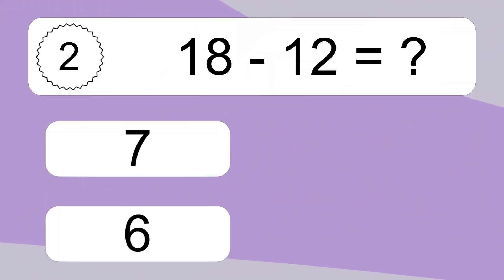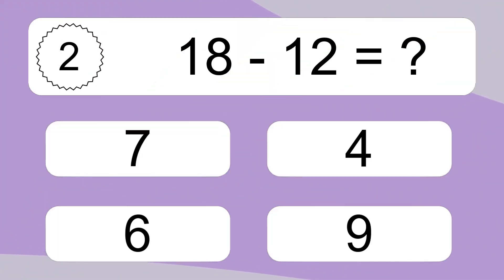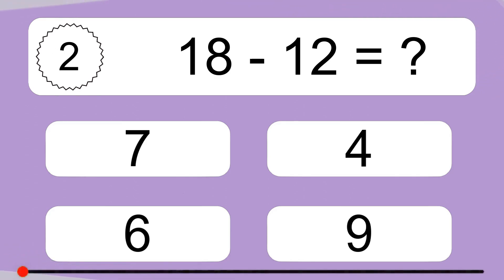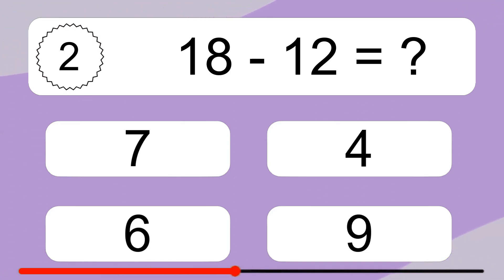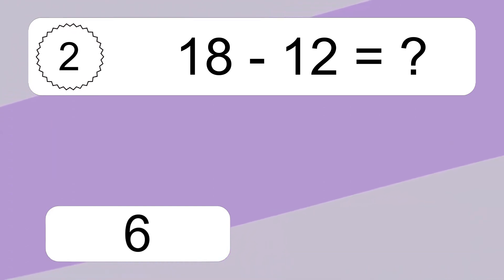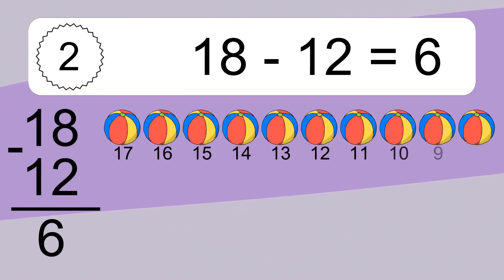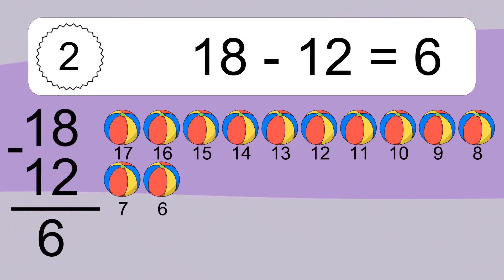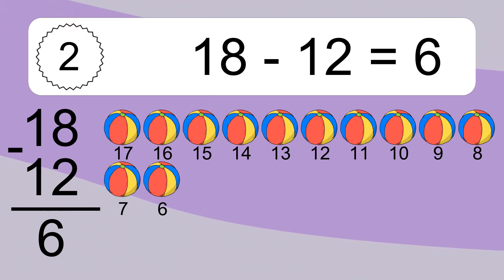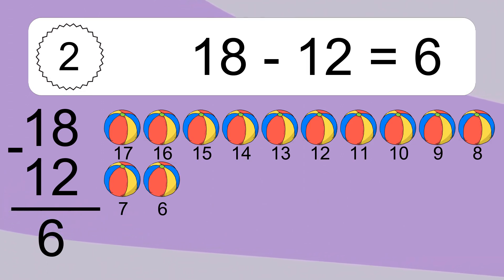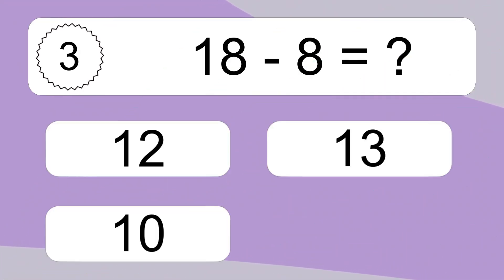18 minus 12 equals what? 18 minus 12 equals 6. Let's count it: 17, 16, 15, 14, 13, 12, 11, 10, 9, 8, 7, 6.